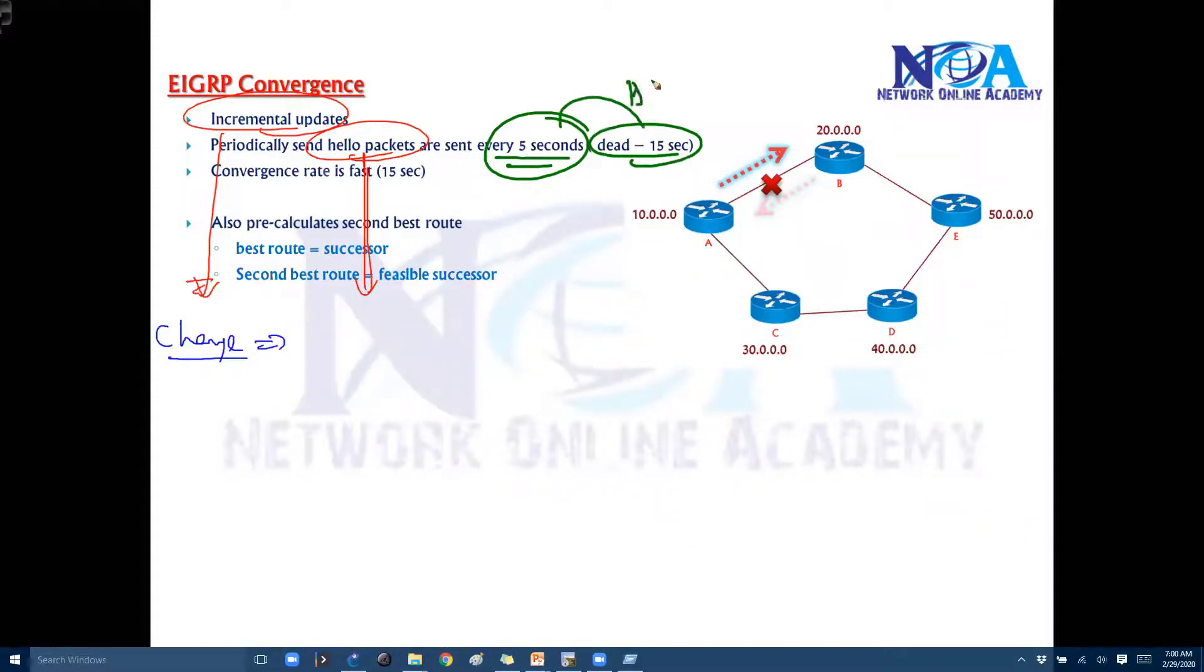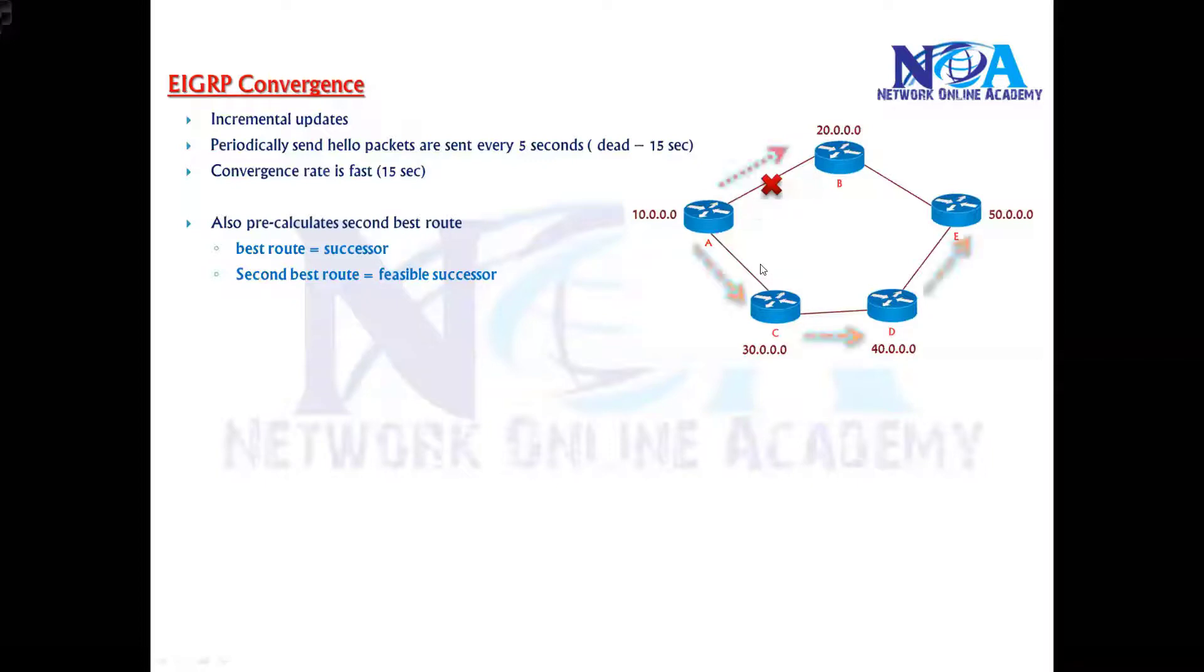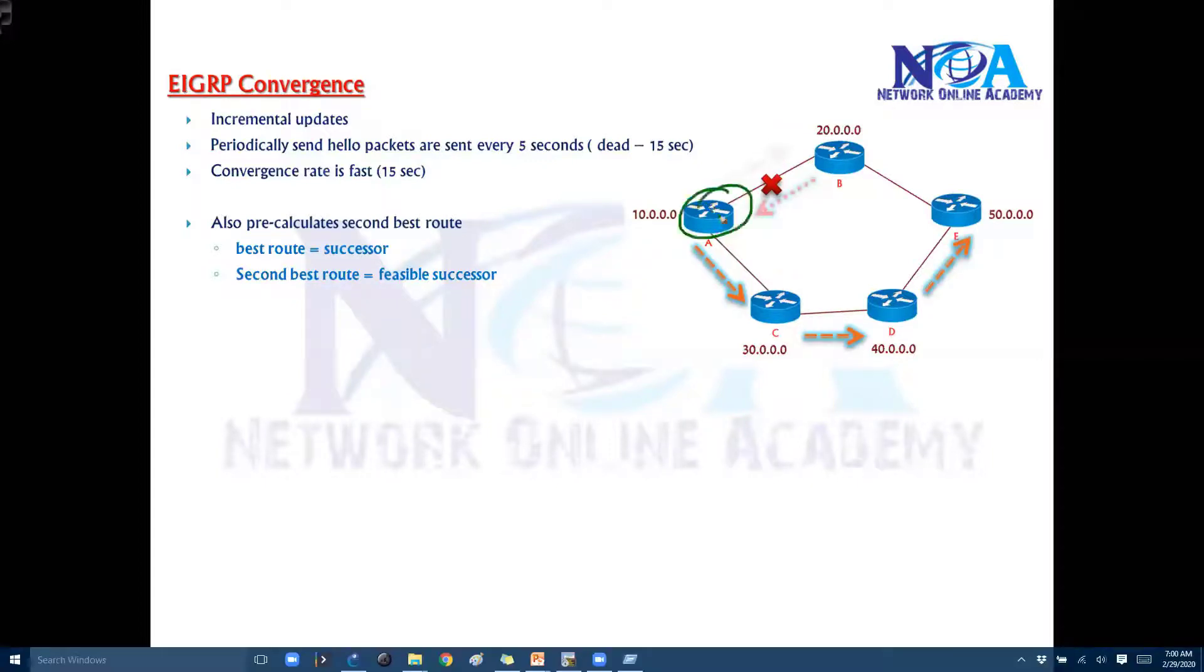So it's going to wait for the maximum of 15 seconds. So that is the maximum time it's going to wait. And after 15 seconds it will start using the alternate route. So which means the router A is going to automatically install the alternate route to reach the same 50 dot network.